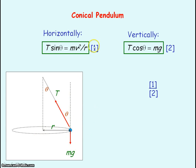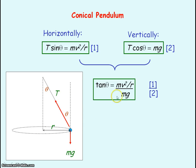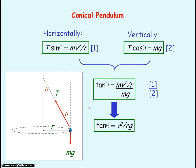If we divide these two equations — equation one divided by equation two — we get T sine theta divided by T cos theta. The T's cancel and sine divided by cos gives tan theta, which equals MV squared divided by R, divided by MG. The M's cancel and it simplifies to tan theta equals V squared divided by RG. So the radius of the circle that the object moves through is independent of the mass of the object; it depends upon the speed and the angle that the pendulum makes with the vertical.